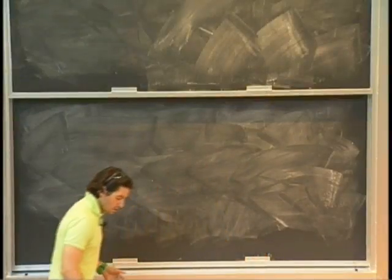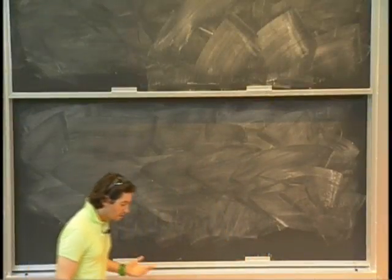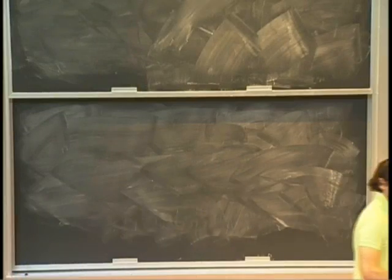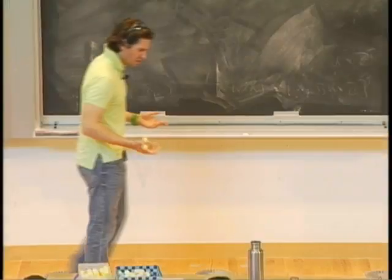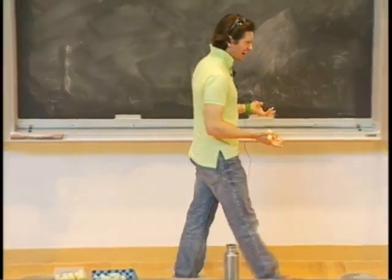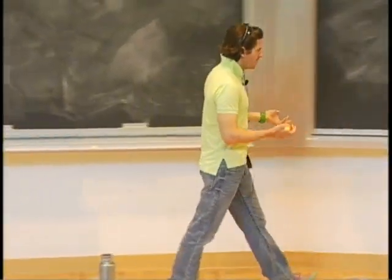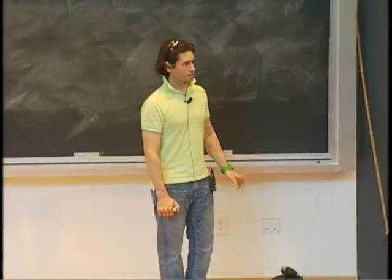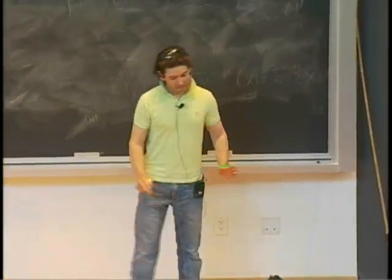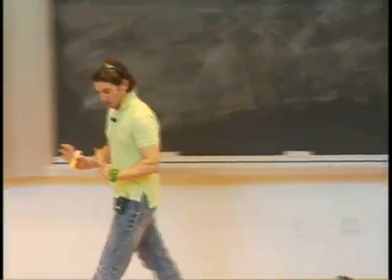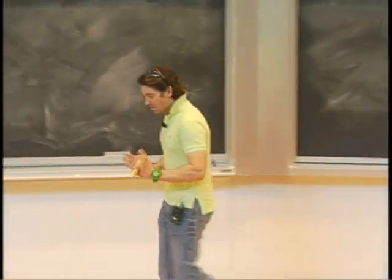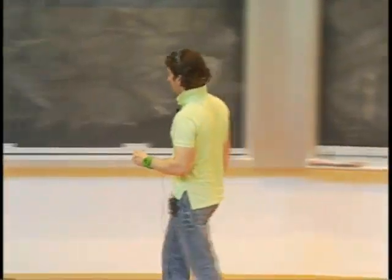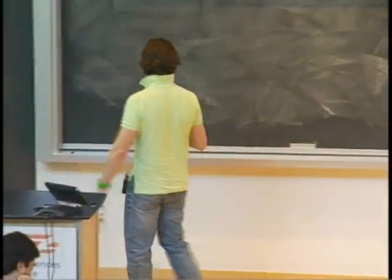I was asked to review some of what I talked about last time. It seems like parts of the discussion, especially the Freudenthal Suspension Theorem's proof, were a little mysterious. So I want to give a brief overview of that and then pick up where I finished last time.